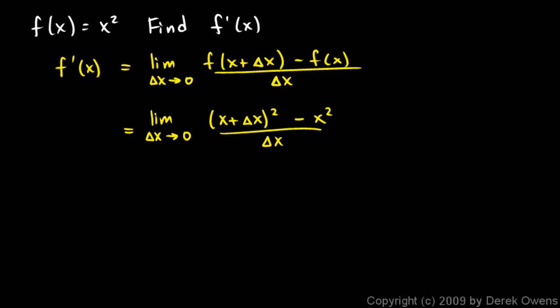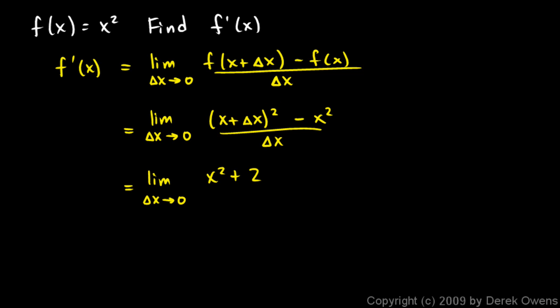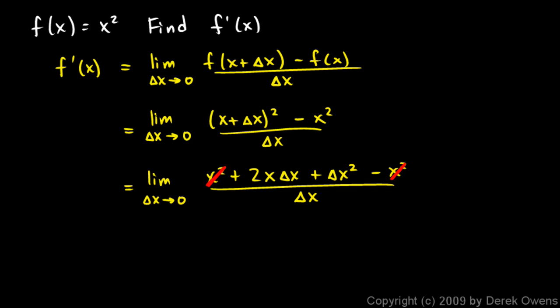Now we have a binomial raised to a power and we need to expand that. When we expand (x + Δx)², we get x² + 2x·Δx + Δx² — minus x² — all over Δx. The x² terms cancel out. Pay particular attention: that's going to happen every time. And all the remaining terms have a Δx in them, so we can factor out a Δx and cancel.